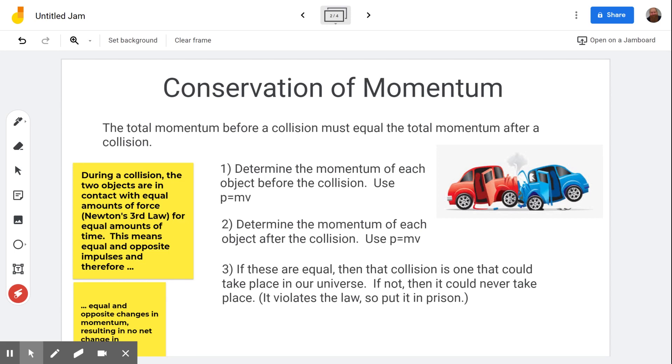This means that equal and opposite impulses, because impulse is force times time, and if they're both equal, the impulse must be equal, and therefore equal and opposite changes in momentum. And if both objects experience equal and opposite changes in momentum, those opposite changes in momentum will cancel out, resulting in no net change in momentum.